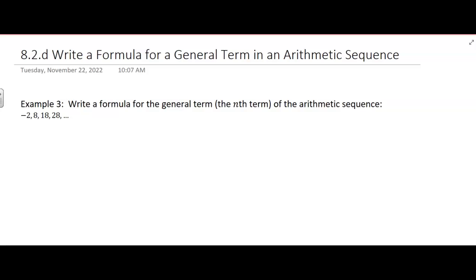Okay, so now they're going to give us a sequence. It says write a formula for the general term, the nth term, for the arithmetic sequence, and they give us the sequence. So I'm going to make that a little bigger. Negative two, eight, 18, 28, and so on and so forth. That's the sequence, and they're telling you it's arithmetic, so we're going to believe them.